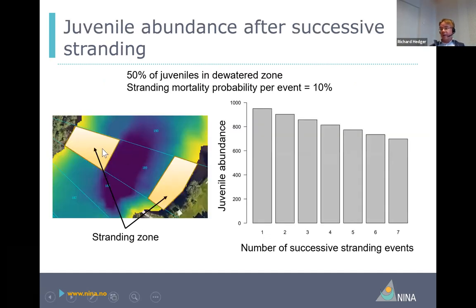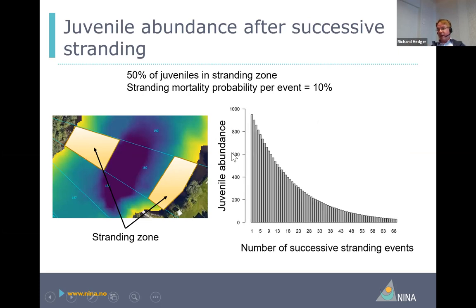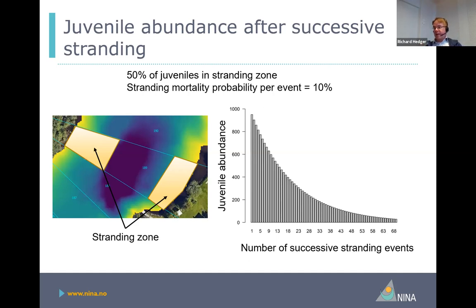Here's an example: we've got a single cell, we assume that 50% of the individuals within the cell are within a stranding zone, running the model for seven hydro peaking events, assuming a stranding probability of 10% — you get a gradual decline. Because after each event the fish die, then recover and redistribute across the cell, then another event occurs, a certain proportion die, and so on. If we are doing many successive hydro peaking events — say 70 events, which could be a week's worth at a high regime — running with a stranding mortality of 10% per event is going to destroy the population, and we wouldn't expect this to happen.